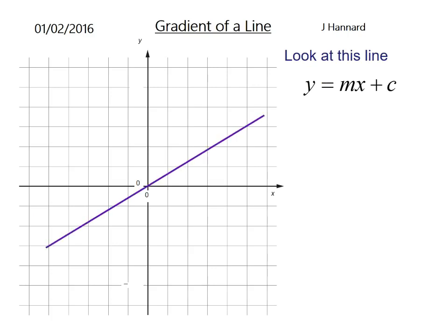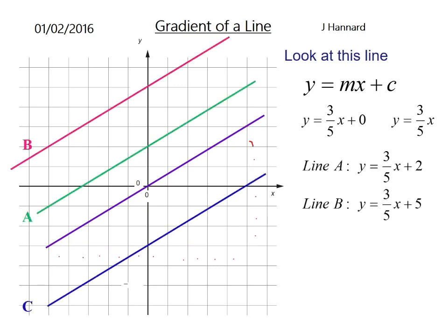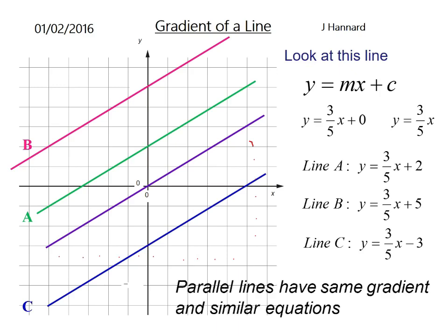Let's have a look at the line y equals mx plus c. To work out gradient, you would usually do the change in y over change in x. You can count the squares: 6 over 10, and you would get 3 fifths once you've cancelled down. So that line is y equals 3 fifths of x. These are all similar lines with the same gradient, and parallel lines have the same gradient and similar equations. The only thing that changes with them is the y-intercept.